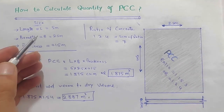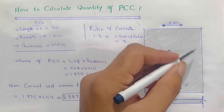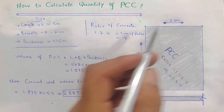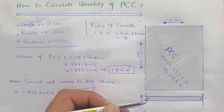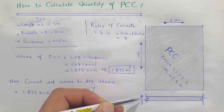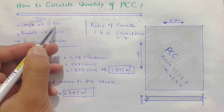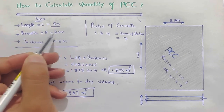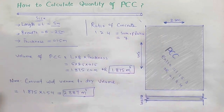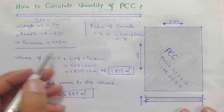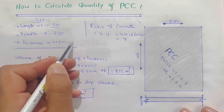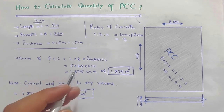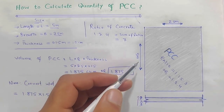The topic is how to calculate the quantity of PCC. The size of the plan on which we need to find the total quantity of material: width is 2.5 meter, length is 5 meter. As you can see in the cross-section, the thickness is 0.15 meter, which you can also say is 15 centimeter or 6 inches.